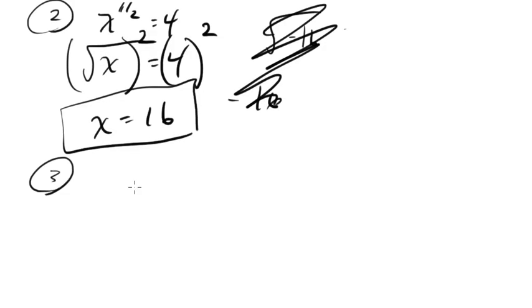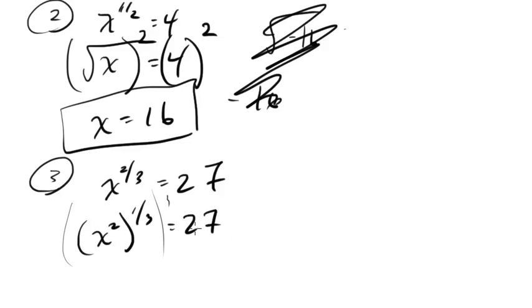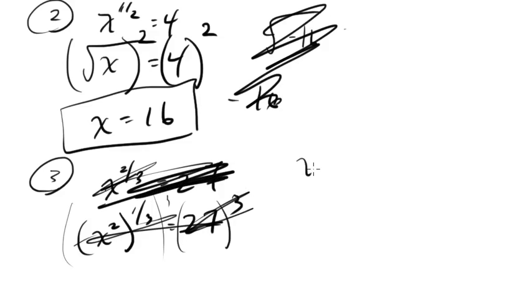Let's look at this third one. What if we had something like x to the 2 thirds equals 27? Well, there's a few ways we can approach this one. We can break this up and say this is x squared to the 1 third equals 27. Then we could cube both sides, and then we could square root both sides. Totally good. Actually, I just realized I made a bad example. Let me change this. I meant x to the 3 halves equals 27. Okay, that's better.